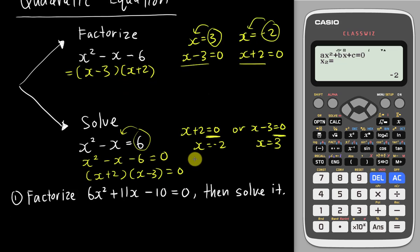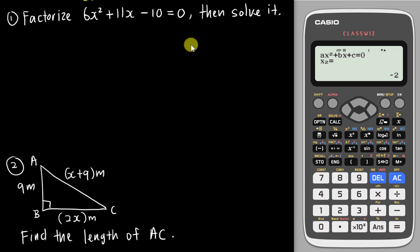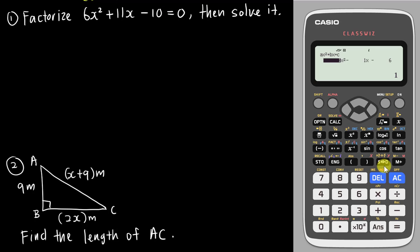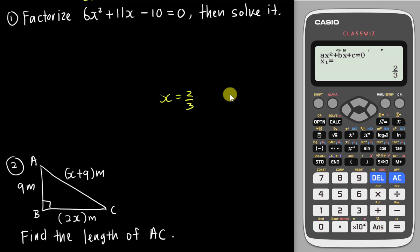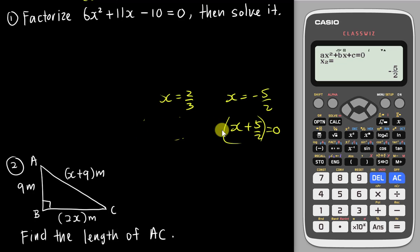What if in the exam you have a more complicated equation like 6x squared plus 11x minus 10? If you use the calculator with a = 6, b = 11, c = negative 10, you get fractions: x equals 2 over 3 and x equals negative 5 over 2. If you straight away write x minus 2 over 3 equals 0 and x plus 5 over 2 equals 0, your teacher will know you copied from the calculator and you won't get the marks for factorization.